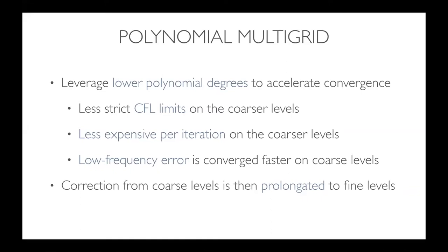If we have a quintic representation of the solution on each cell, we can use the quartic, cubic, quadratic, and linear polynomial degrees as multigrid levels. The advantages of these coarser grid levels are: they have less strict CFL limits so we can take bigger pseudo-time steps, they have fewer degrees of freedom so they're less expensive per iteration, and similar to geometric multigrid, low-frequency error converges faster on coarse levels. We go down to the coarsest grid level and then prolongate the correction back up to the finest level to accelerate convergence.